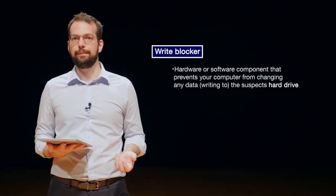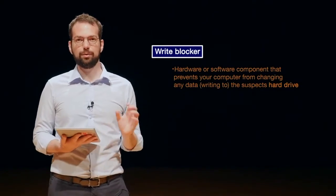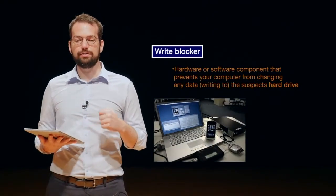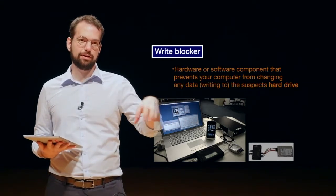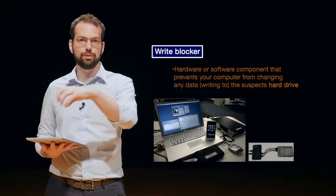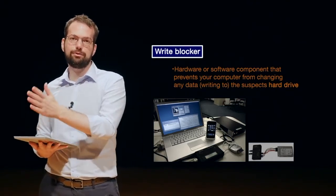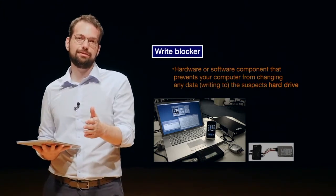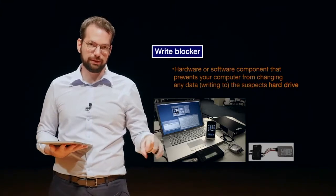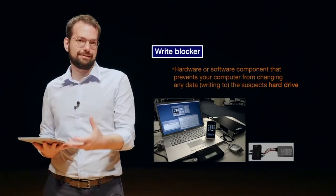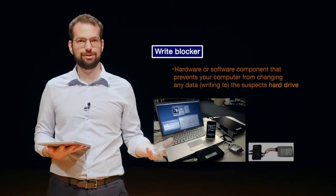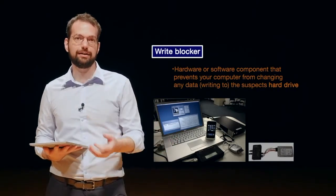One of the biggest things we use to ensure we are not modifying data in digital forensics is something called a write blocker. A write blocker can be a physical device or a piece of software installed on your computer. When you connect a suspect's hard drive to a write blocker, and the write blocker to your forensic workstation, your workstation is physically prevented from writing any data to the suspect's hard drive. You can still read all the data off the drive, but you cannot write to it. This ensures our computer doesn't accidentally write any information to the suspect disk, so we get an unmodified copy every single time.